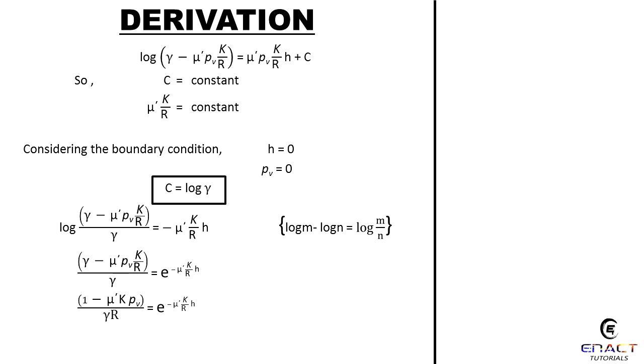log[(γ - μ'pVK/R)/γ] = -μ'K/R·h, where log m - log n = log(m/n). (γ - μ'pVK/R)/γ = e^(-μ'K/R·h). (1 - μ'K·pV/γR) = e^(-μ'K/R·h).